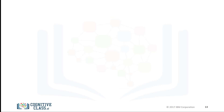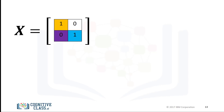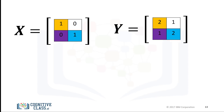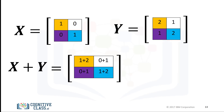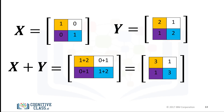We can also add arrays. The process is identical to matrix addition. Consider the matrix X — each element is colored differently. Consider the matrix Y — similarly, each element is colored differently. We can add the matrices. This corresponds to adding the elements in the same position, i.e. adding elements contained in the same color boxes together. The result is a new matrix that is the same size as matrix X or Y.